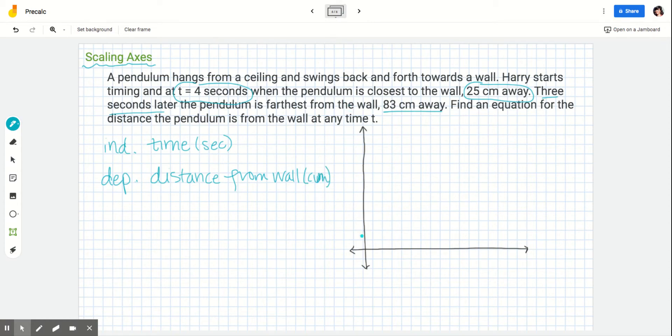That means when we set up our axes here, this x-axis is going to represent time and this y-axis is going to represent distance. You really should write out all those words: distance from wall measured in centimeters, time measured in seconds.